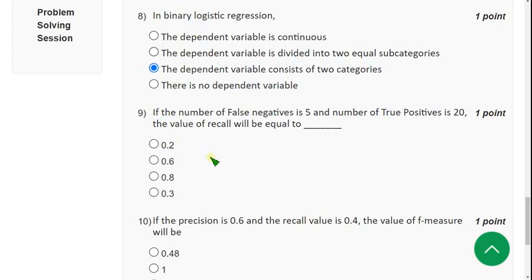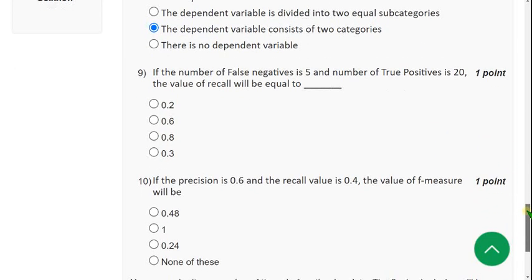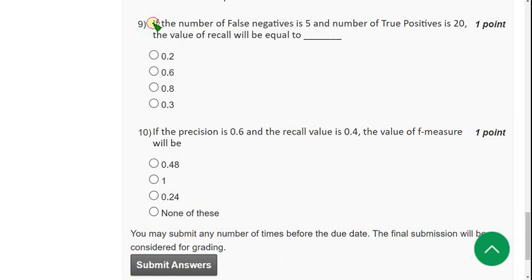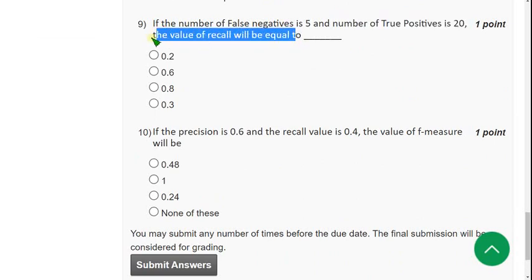Next moving on to the ninth question. If the number of false negatives is 5 and number of true positives is 20, the value of the recall will be? What is the value of recall? The answer for this question is third option again: 0.8. Answer is 0.8.